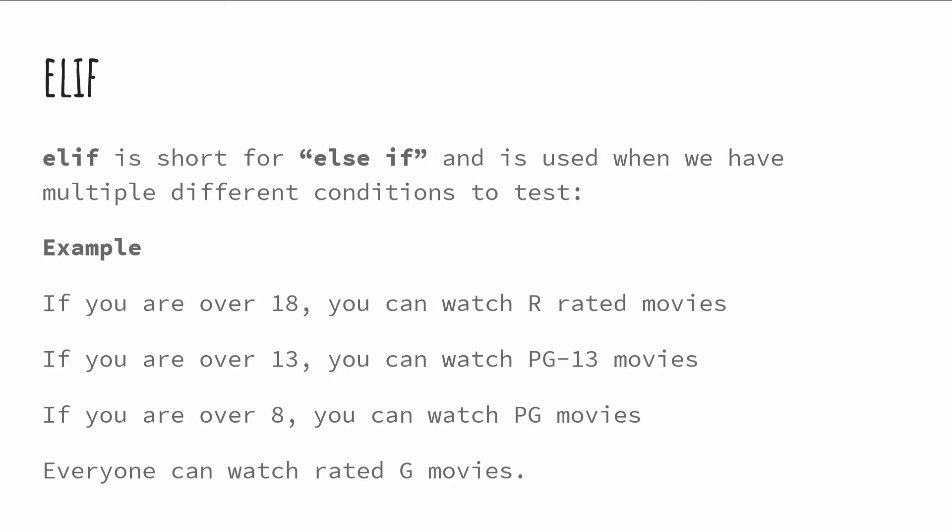Now what we're doing is saying there are definitely some situations where there's not just two possible outcomes — true and false — there's a bunch of different possibilities. I'm giving you an example where if we're talking about going to the movies, you might have a bunch of different possibilities. There's not just R and not R — there's R, PG-13, PG, and G ratings. Depending on how old you are, you might be allowed to see different movies.